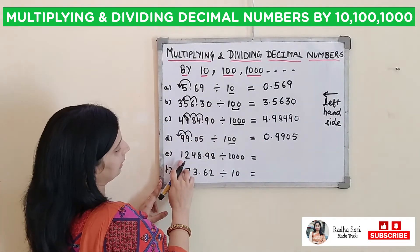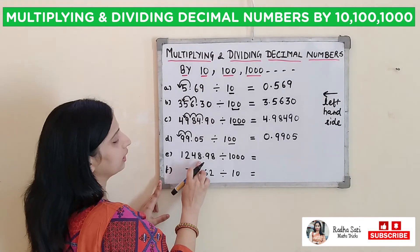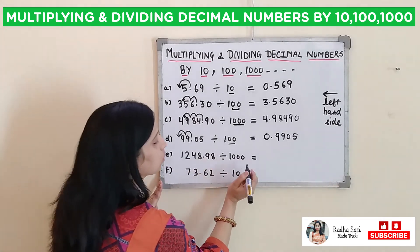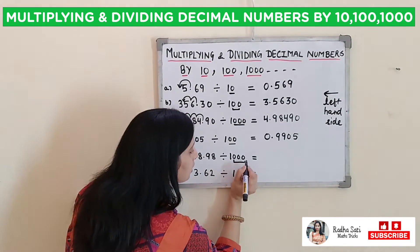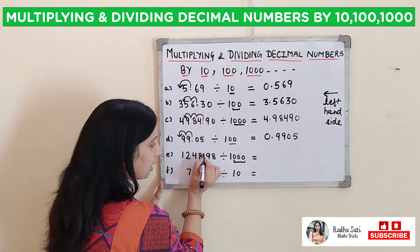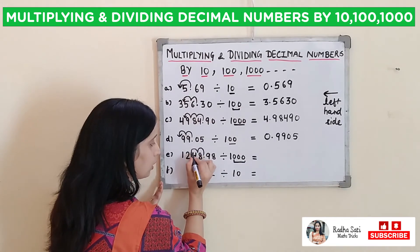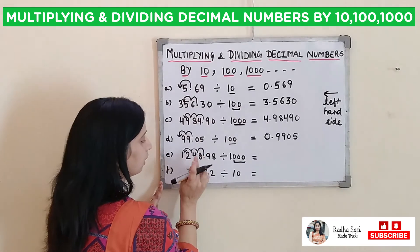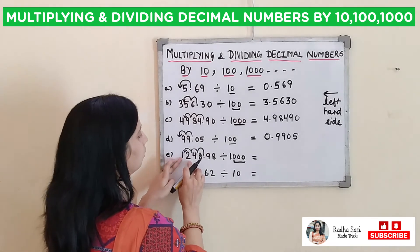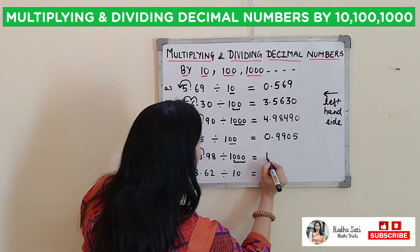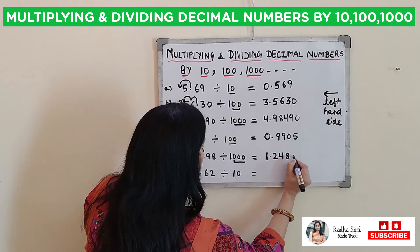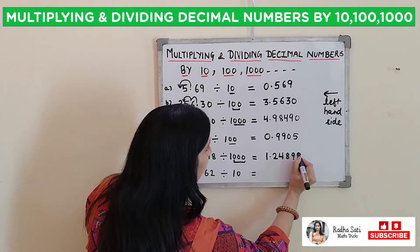Next is 1248.98 divided by 1000. We know there are 3 zeros in 1000, so our decimal will shift to the left side by 3 places — 1, 2, 3. Now our decimal will come between 1 and 2, and our answer will become 1.24898.